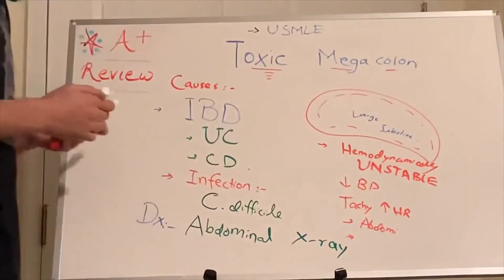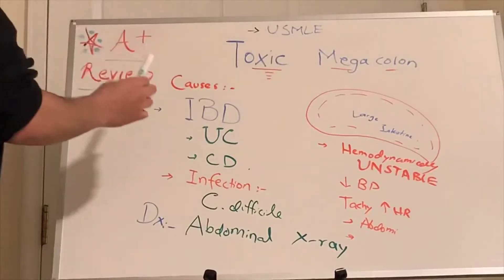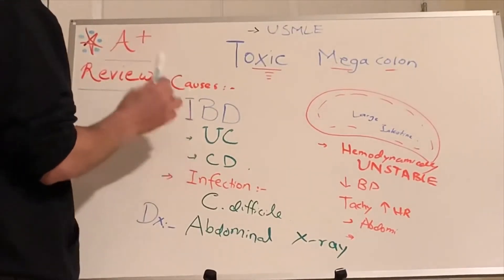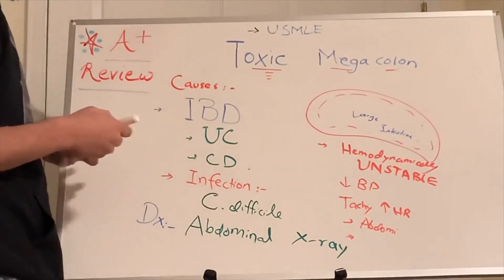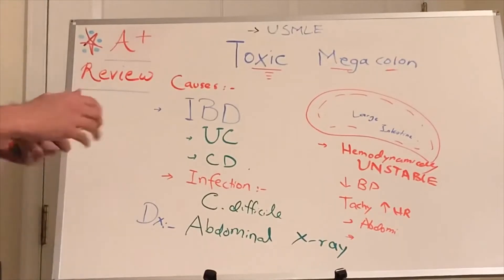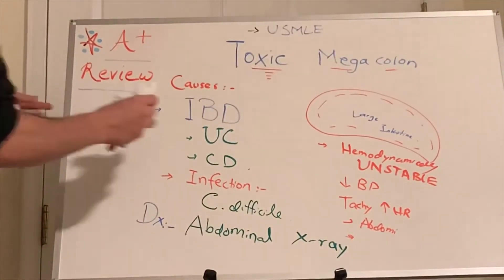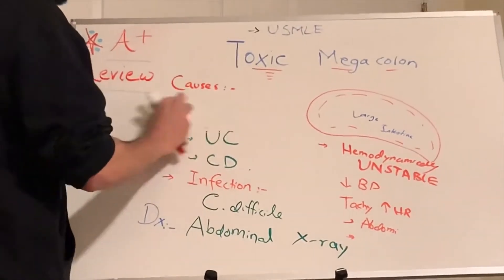The x-ray will show a fluid level and there is a huge distension. The patient with toxic megacolon is unstable, so now go with the causes and treat them. The treatment initially — let's talk about that.